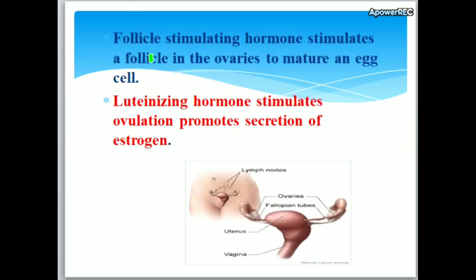Follicle stimulating hormone stimulates a follicle in the ovaries to mature and develop. Luteinizing hormone stimulates ovulation and promotes secretion of estrogen.